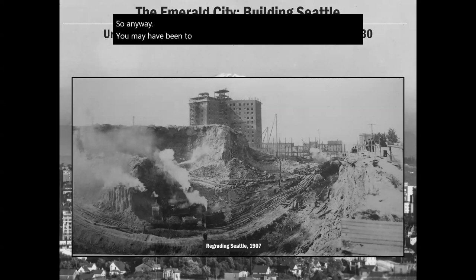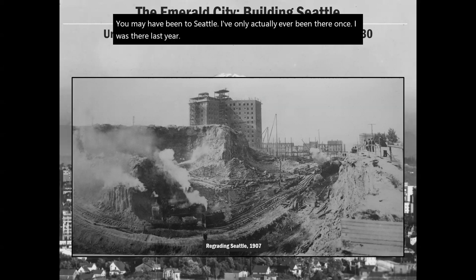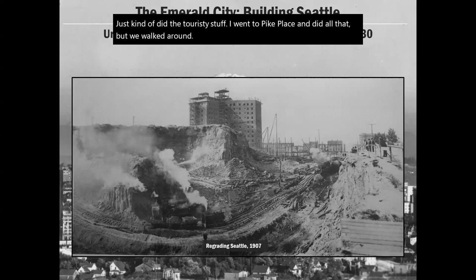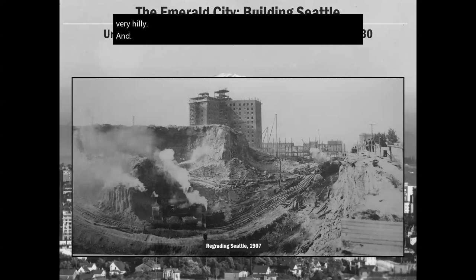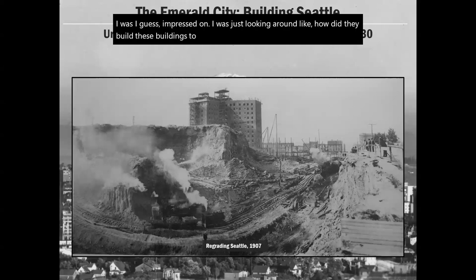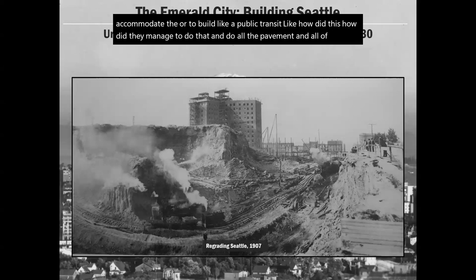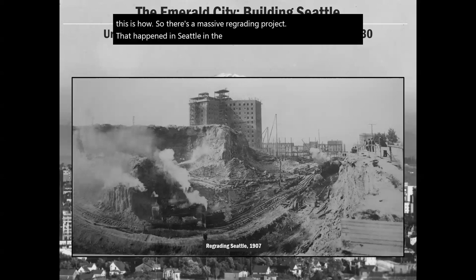You may have been to Seattle — if you've been there you'll know it's very hilly. When I was there I was impressed and wondering how they built these buildings level and how they managed public transit, pavement, all of it. The answer is a massive regrading project that happened in Seattle in the early years right after this population boom. Seattle's population doubles and there's a huge economic demand — real estate development or commerce there could be a big return on investment.